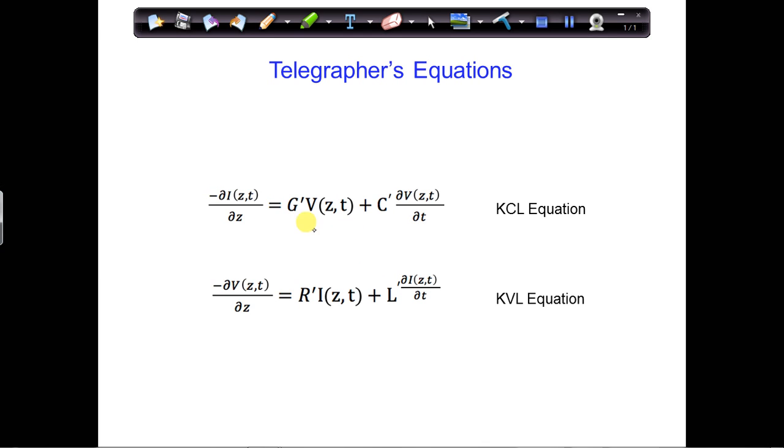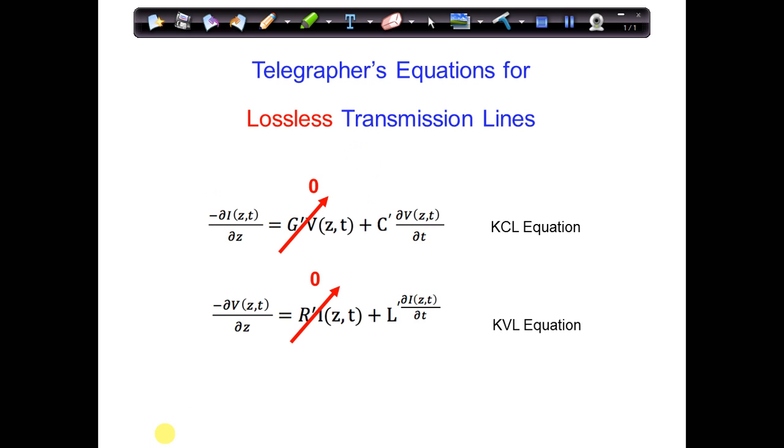If the lines are lossless, then the r and the g terms go away, because r prime and g prime are equal to zero. And then this is what we get.